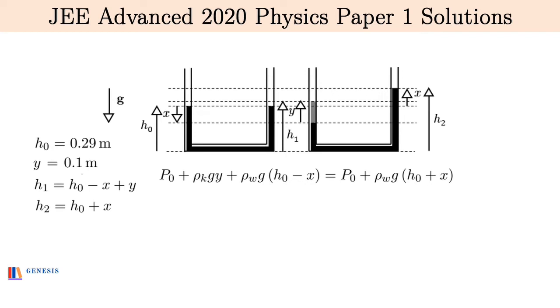Now this is equal to, on the right side, P0 plus the whole thing is a water column of height h0 plus x, so we can write P0 plus ρw g times h0 plus x.